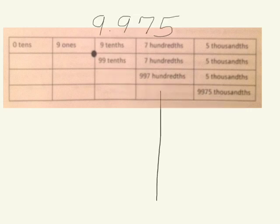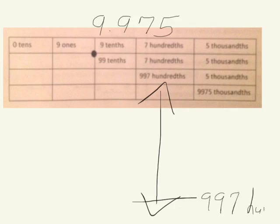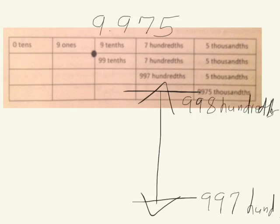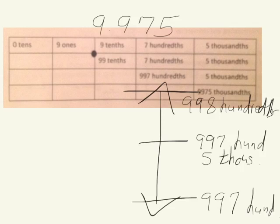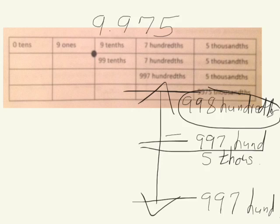Finally, when we round our number to the nearest hundredth, we see that we have 997 hundredths. The next hundredth up would be 998 hundredths. Midway would be 997 hundredths and 5 thousandths. Our number has exactly 997 hundredths and 5 thousandths — exactly at the midpoint. When we are at the midpoint, we round up. This number rounds to 998 hundredths, which is nine and ninety-eight hundredths.